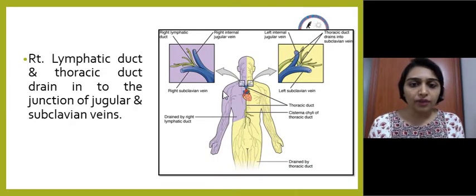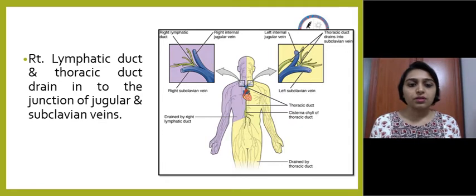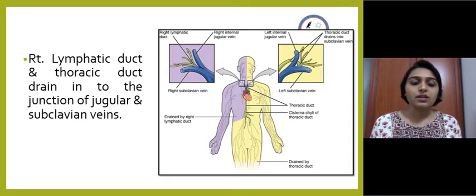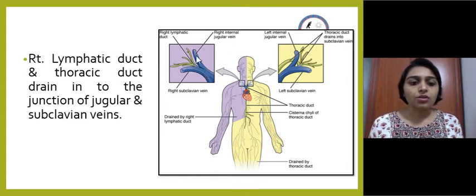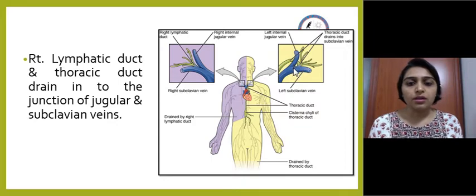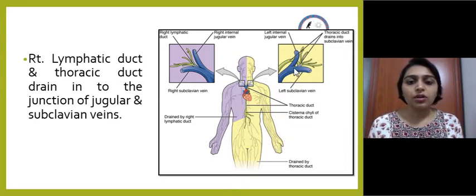The right lymphatic duct and thoracic duct drain into the junction of the jugular and subclavian veins. On the right side, the right lymphatic duct drains at the junction of the right internal jugular vein and right subclavian vein. On the left side, the thoracic duct drains into the junction of the left internal jugular vein and left subclavian vein.